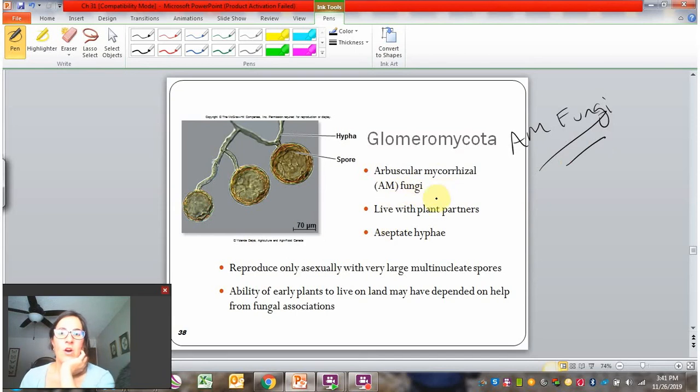Remember, these are the ones that are living in the roots of plants always. They're always living with plant partners. They're aseptate. They only reproduce asexually, so they do not carry out sexual reproduction. And as I mentioned before, this particular group actually may have been super important to early plants that moved on to land. They needed the fungi to help them access nutrients and water before there was substantial soil. So fungi may have been critical in the development of substantial soils that later plants would rely on. And that's the glomeromycota, not a lot to say about them.